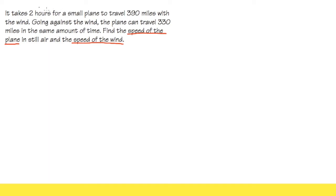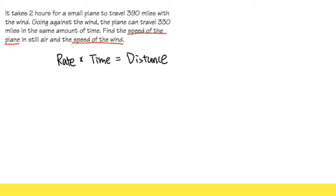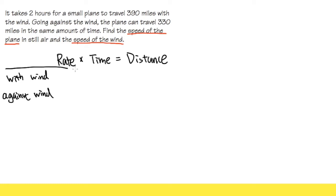Right here it talks about time — the two hours — and also the distance — the 390 miles. We have to use the formula rate times time is equal to distance; that's something you have to remember. Because we have two unknowns, we need two situations to come up with two equations. The first situation is when we go with the wind, and the second is when we go against the wind. Let's draw a tic-tac-toe box to organize all the information.